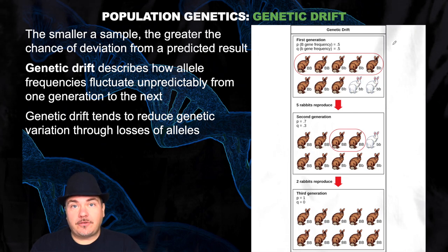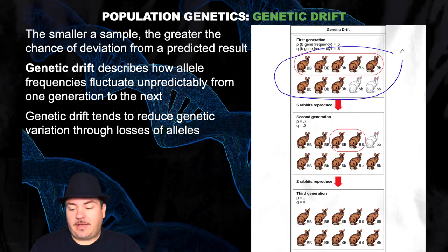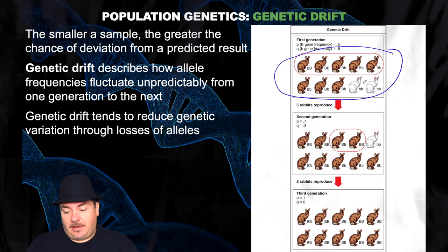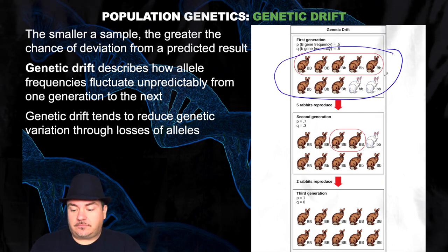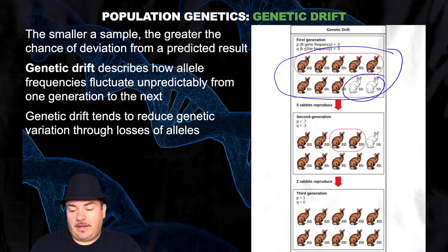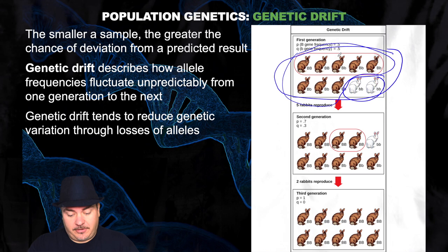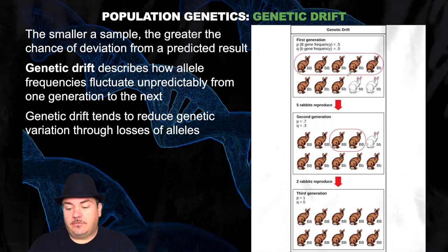Here's an example. Let's say we have a small population size — in this example, only a population of 10 rabbits. Out of those rabbits, two of them are white-colored phenotypes and eight of them are the brown-colored phenotypes, brown being the dominant allele of the two.